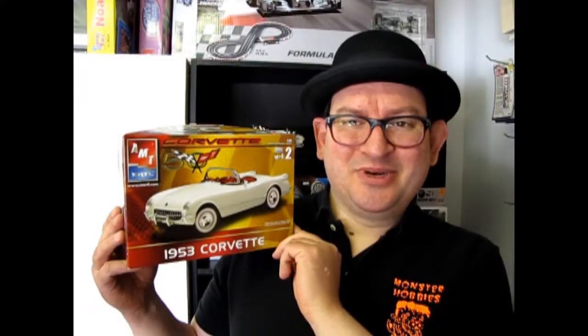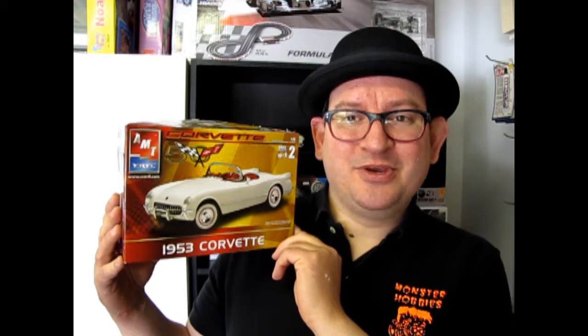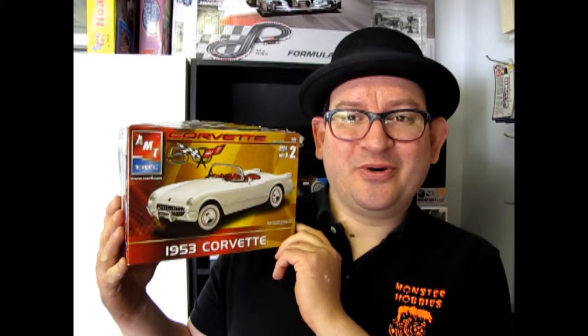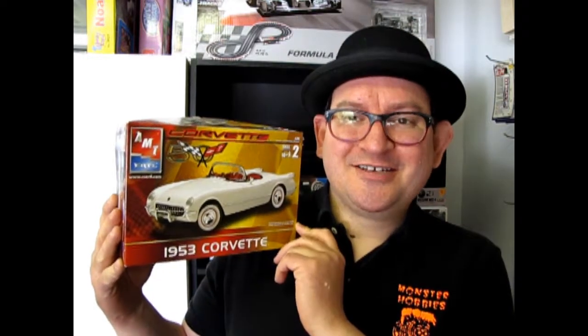Well I hope you enjoyed this episode of Monster Hobbies What's in the Box where we got to look at the '53 Corvette kit from AMT Ertl, one of America's first sports cars. So if you would like to check out some of our other car videos please click here, click here, and click down here. Don't forget to like and subscribe to us right here so I can continue to open up all my model kits at home. Ha ha, anyway we'll talk to you later, bye.